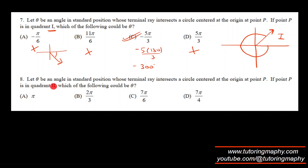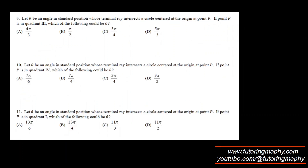Here we need to find a quadrant 2 angle. 2π/3 is 120°, so it's clearly in quadrant 2 — that's option B. For quadrant 3: replacing π with 180, 4π/3 = 240°, which is definitely in quadrant 3.